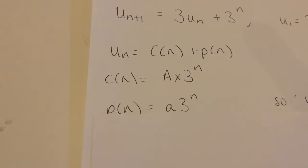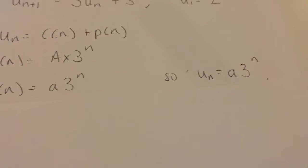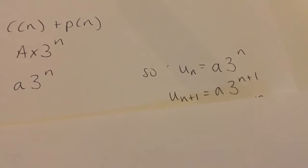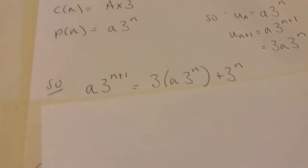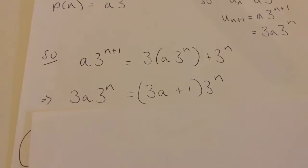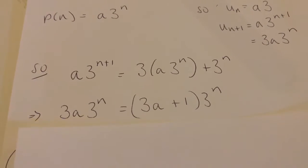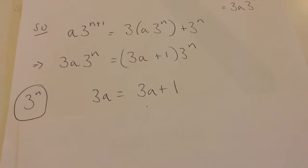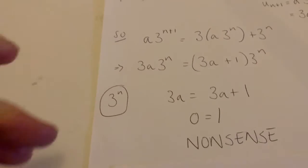We'll go on anyway. My particular solution for an exponential is a times 3 to the n. So u_n is a times 3 to the n, and u_{n+1} is a times 3 to the n+1, which sorting out the indices gives 3a times 3 to the n. Substituting into the recurrence relation and sorting out indices — 3 to the n+1 becomes 3 times 3 to the n — then taking out a factor of 3 to the n on the right-hand side and comparing coefficients of 3 to the n, I get 3a equals 3a plus 1, which gives 0 equals 1. That doesn't work at all.